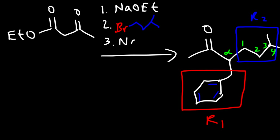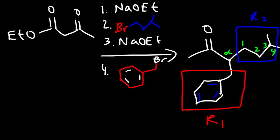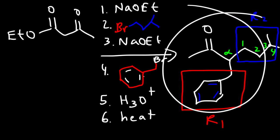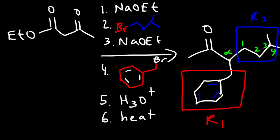In step 3, we need to use sodium ethoxide again. In step 4, we can add the other R group — basically, the benzyl group. Then in step 5, we add H3O+ to acidify the solution. The last step is heat. Those are the reagents we need to make this particular ketone. So that's all I have for the acetoacetic ester synthesis reaction — just remember, it's good for making ketones. Thanks for watching.